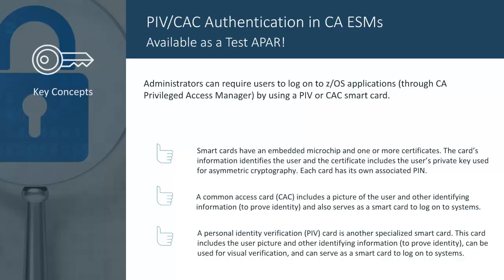Administrators can require users to logon to ZOS applications through CA Privilege Access Manager by using a Common Access Card or a Personal Identity Verification smart card, followed by a CA ACF2 password or password phrase. A smart card is a credit card-sized card that has an embedded microchip and one or more certificates. The information on the card identifies the user, and the certificate also includes the user's private key used for asymmetric cryptography.